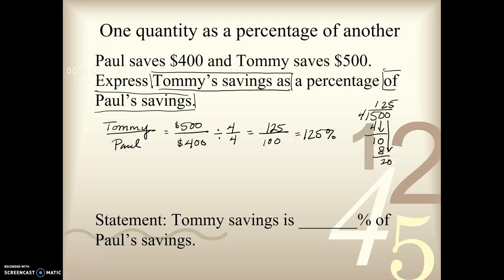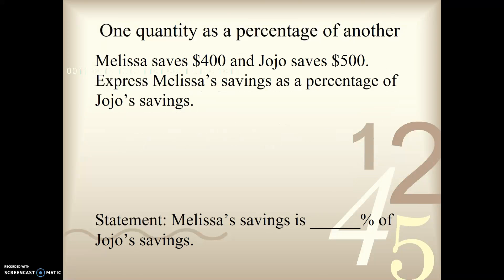So that equals 125%. We are going to use our answers, and we're going to write a statement with them. So the first couple are done for you, and all you have to do is fill in a blank, but then you're going to be on your own to write your own statements. So in this problem, our statement is, Tommy's savings is 125% of Paul's savings.